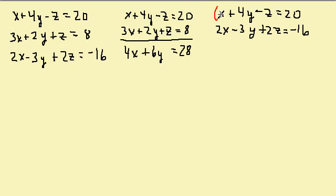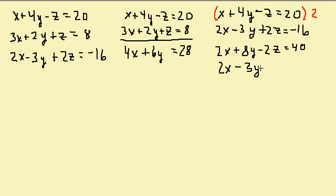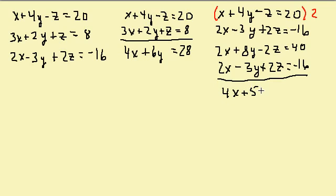Over here, I need to multiply this one by 2 because that will give me negative 2z plus 2z equals 0. So I multiply the first one by 2: I get 2x plus 8y minus 2z equals 40. Then I write the third equation down: 2x minus 3y plus 2z equals negative 16. And I add, so I get 4x plus 5y equals 24.